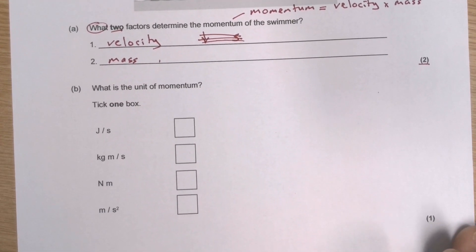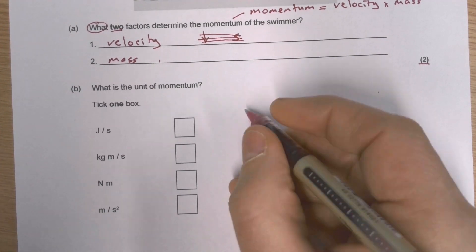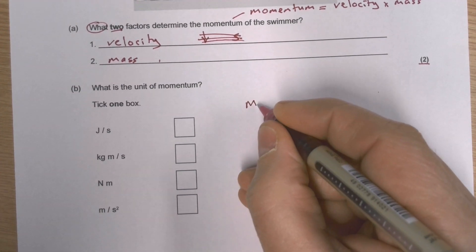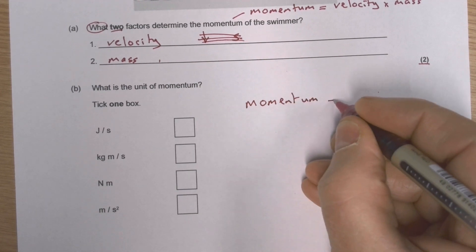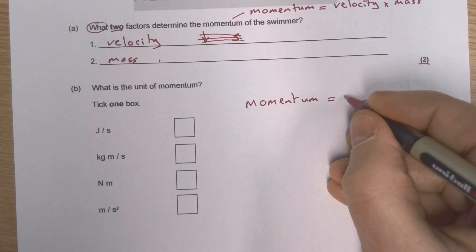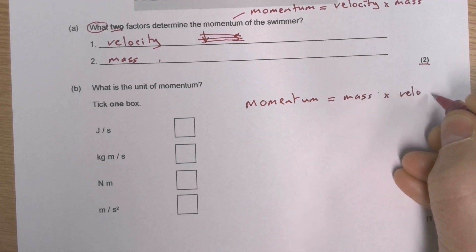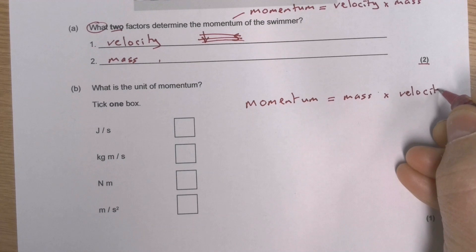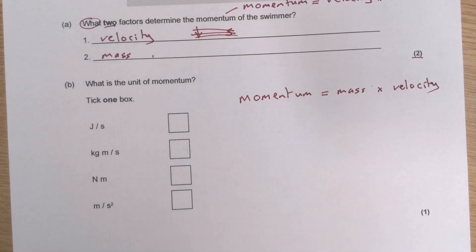Question B: What is the unit of momentum? You may well get this question. We know that momentum equals mass times velocity. What we can do is use that equation to derive the units. I need to find out what is the unit of momentum — there's a tick box, so you tick one box only.